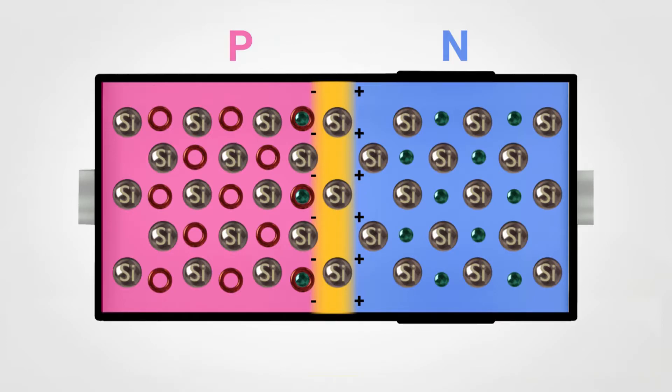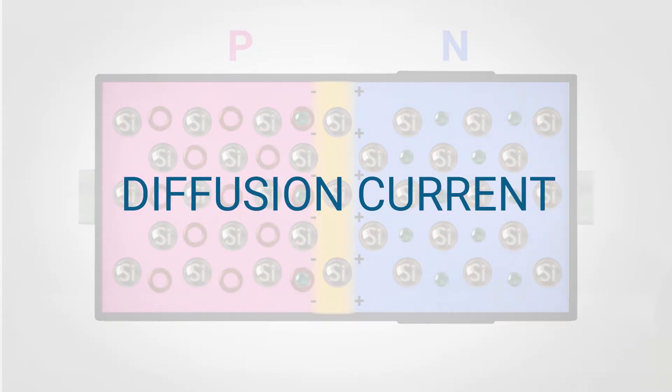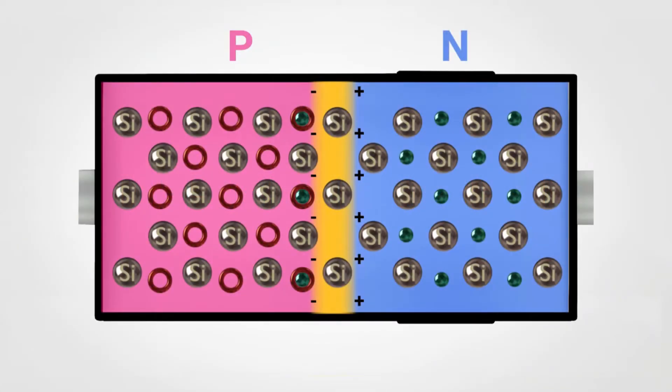A current, called diffusion current, will flow between the two parts and will try to balance this difference in the charges.